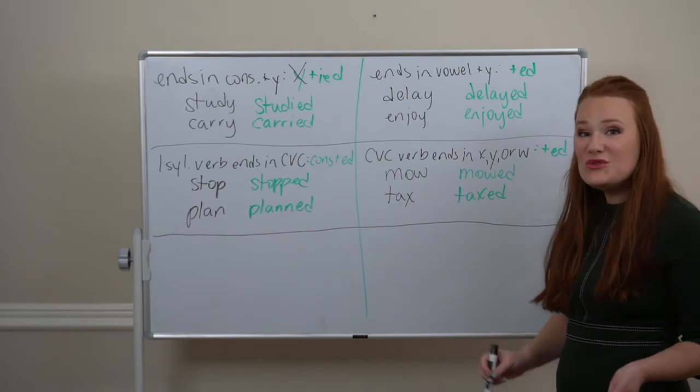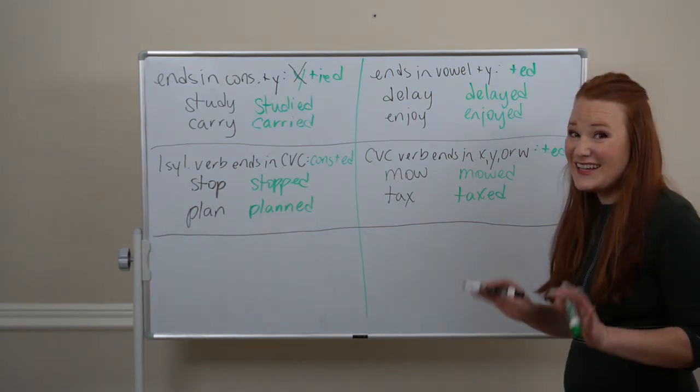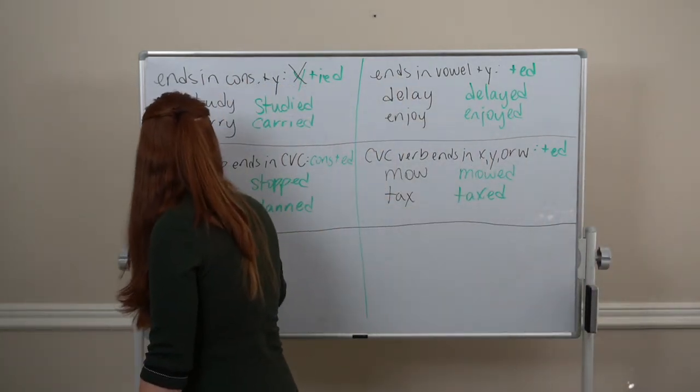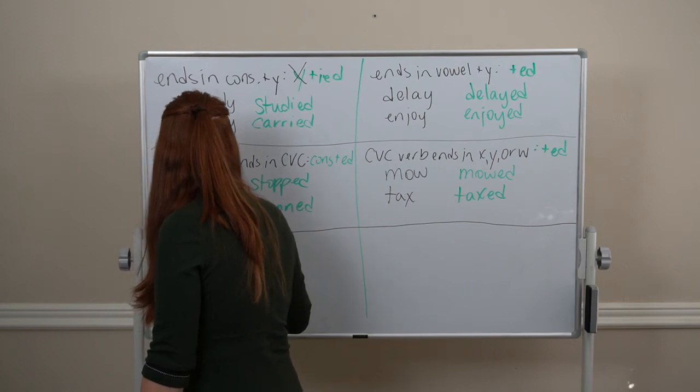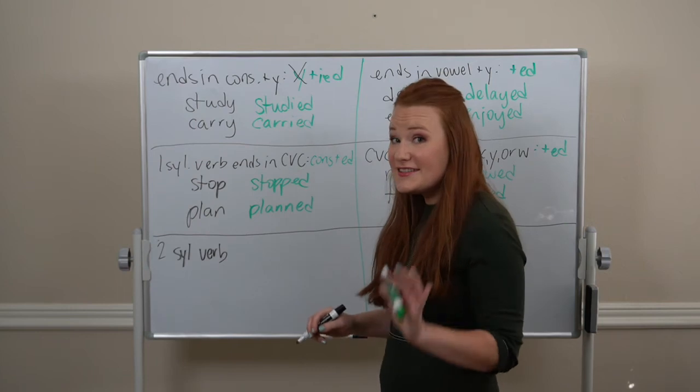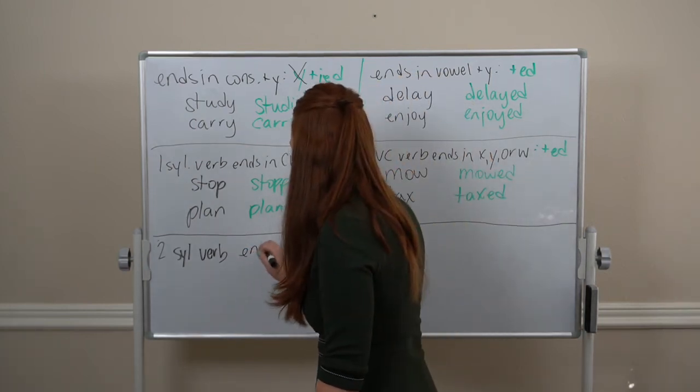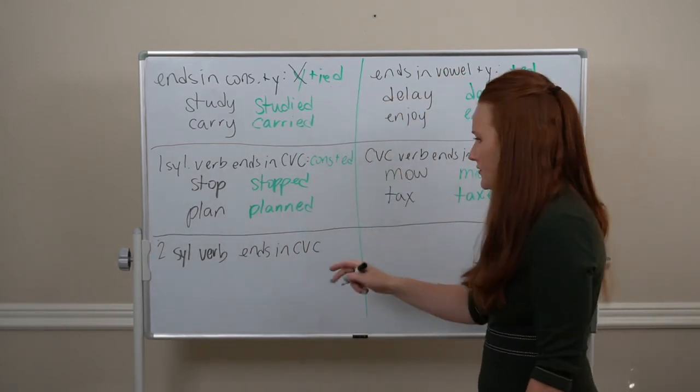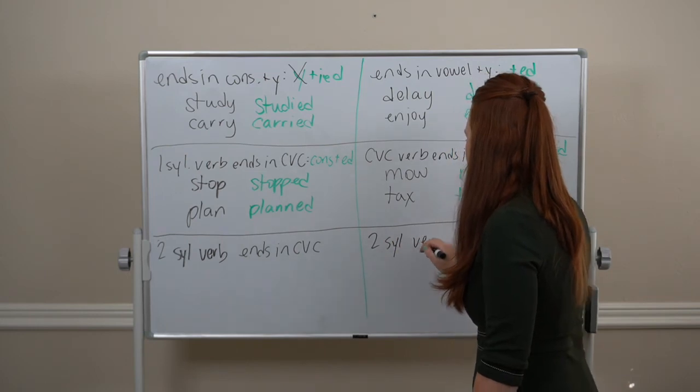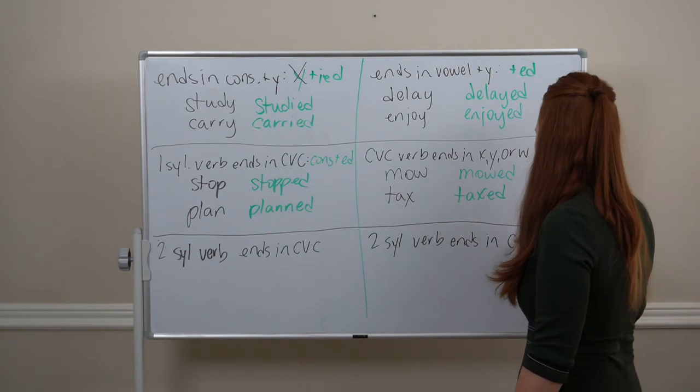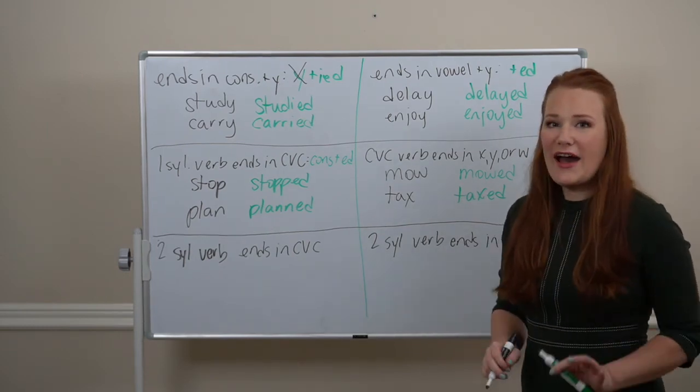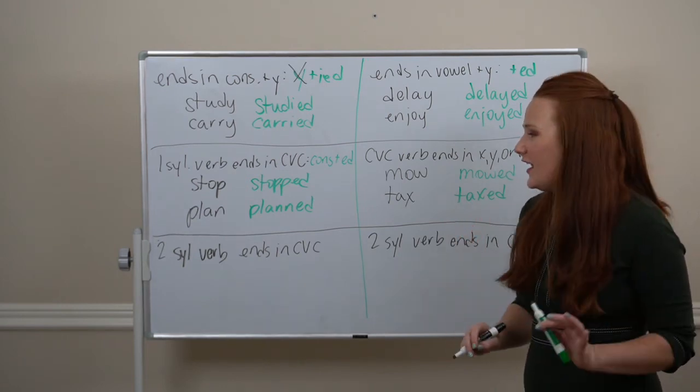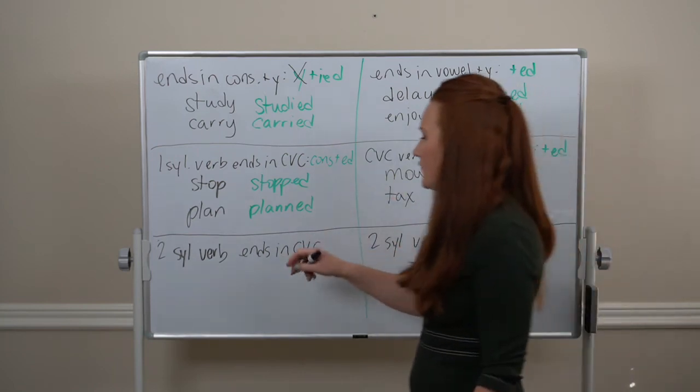Okay. What about two-syllable verbs? These ones get kind of weird. Stay with me. A two-syllable verb that ends in CVC has two possibilities. We care about the emphasis in the verb. So, with two syllables, if the emphasis goes on the first syllable.